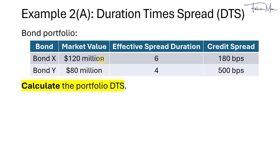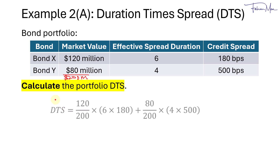To calculate the portfolio DTS, we take the market-value weighted average. The total market value is $200 million. For Bond X, we take 120/200 × 6 × 180. For Bond Y, we take 80/200 × 4 × 500. Summing these gives a portfolio DTS of 1,448.